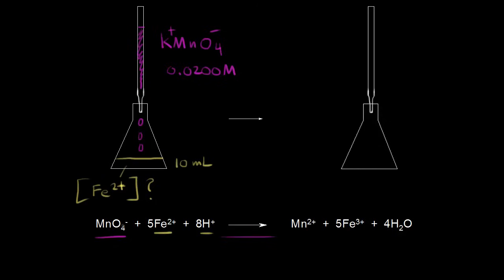Let's look at some oxidation states to confirm this is a redox reaction. For oxygen it would be −2, and we have four oxygens, so −2 times 4 is −8. Our total has to equal −1, so for manganese we must have +7, because +7 and −8 give us −1. So manganese has an oxidation state of +7 in permanganate.